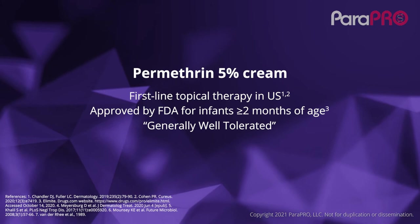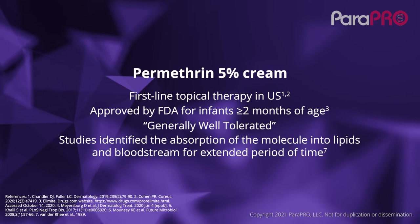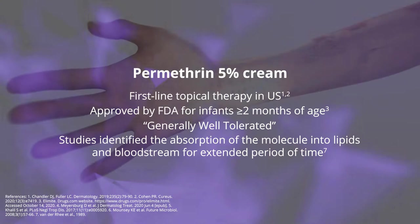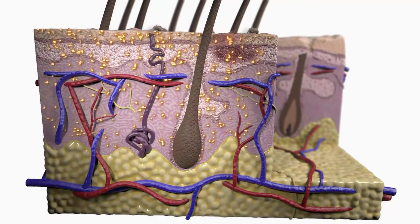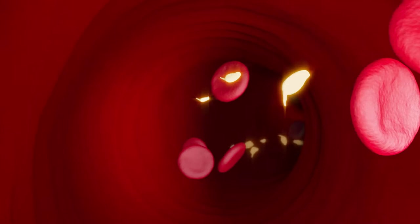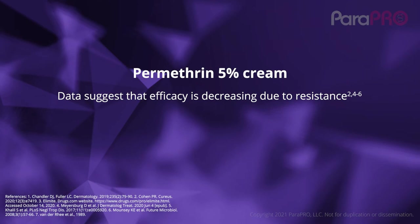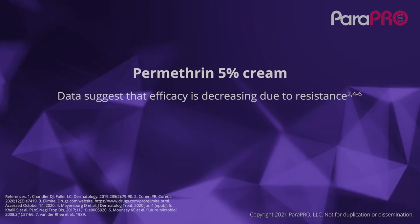Permethrin 5% cream is one of the currently available therapeutic agents. It is both scabicidal and ovicidal. It is first-line therapy and approved by the FDA for infants older than two months of age. It is applied topically to the skin, absorbs through the epidermis and into the dermis, going into blood vessels and then spreading to other areas of the body. Its efficacy used to be higher and seems to be decreasing, possibly secondary to resistance of the scabies mites to the agent.